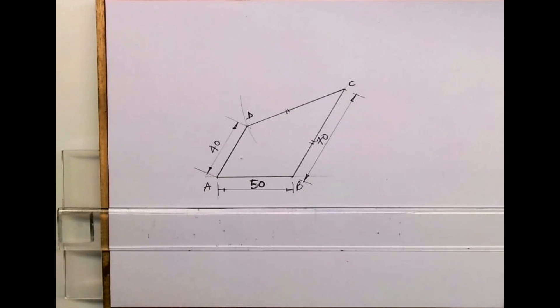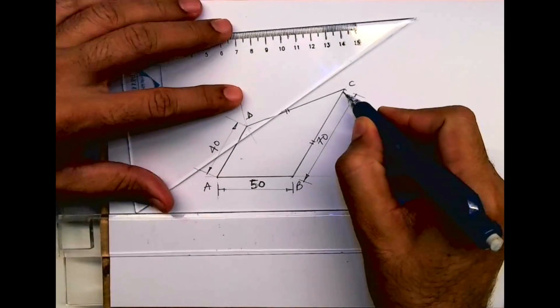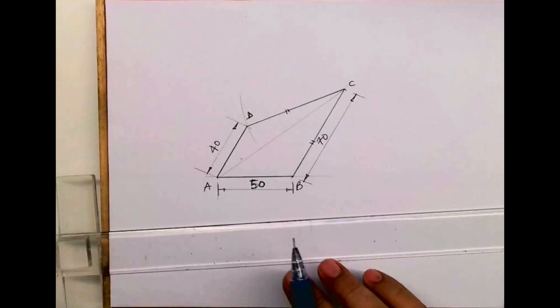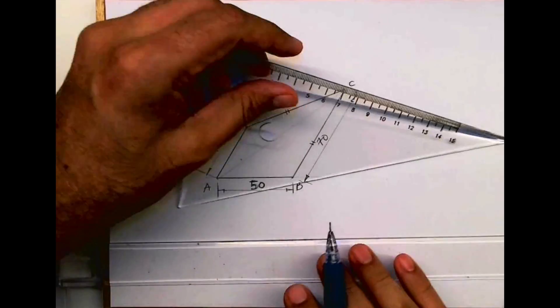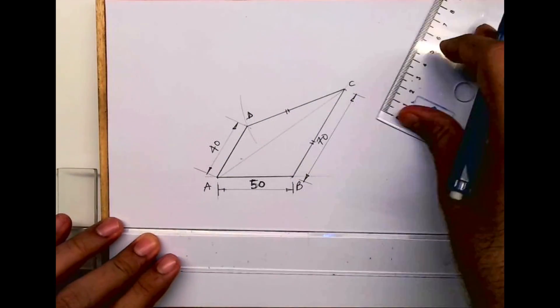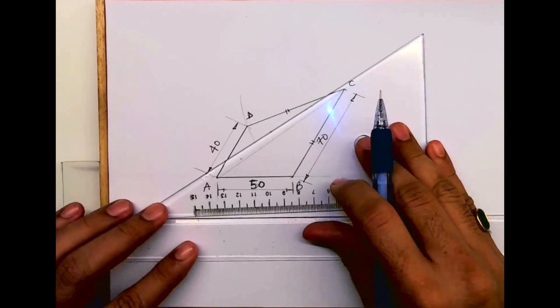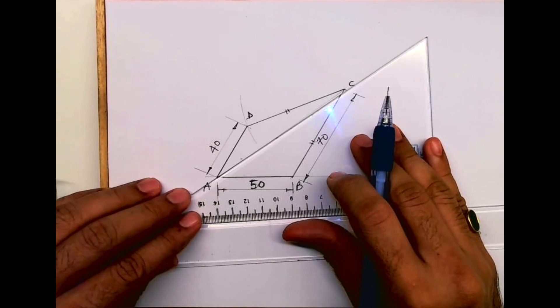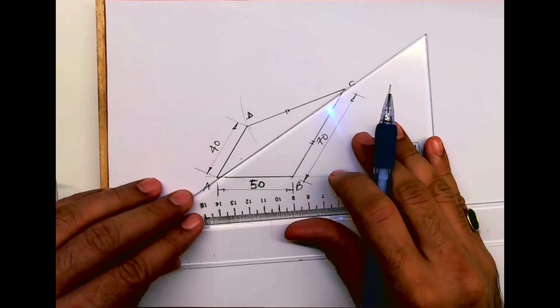First we will draw this given quadrilateral, then we'll join the diagonal. After that, draw a parallel line.